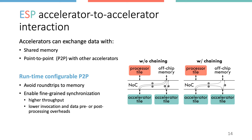Another option users can select at runtime is point-to-point communication among accelerators. Whenever possible, point-to-point minimizes round-trip accesses to memory, offering significant energy savings and performance improvements. In addition, it enables a finer-grained synchronization mechanism between accelerators — accelerators can synchronize at the granularity of a single transaction or memory transfer, rather than at the granularity of a full accelerator invocation, offering higher bandwidth for streaming applications or batching.